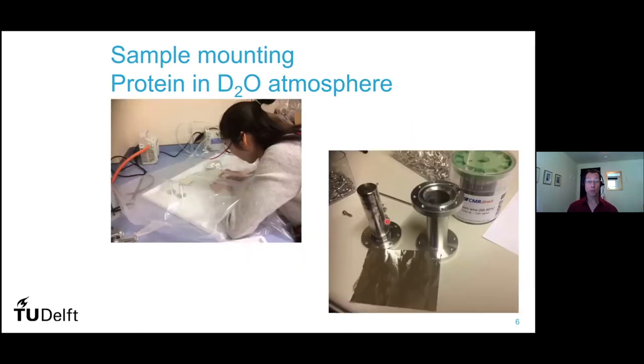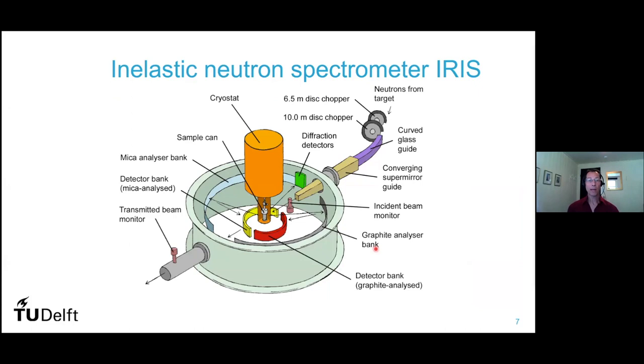We did measurements. We did inelastic neutron scattering measurements. And there we prepared samples in different manners, in different environments, with D2O and with H2O. And we put them in a container just like this. And then we went to England, to ISIS, where you have a big neutron facility.